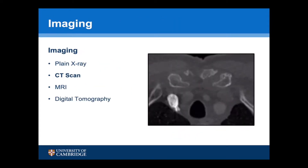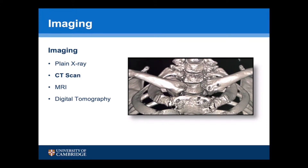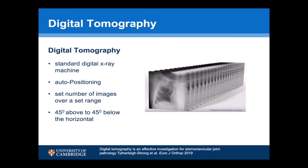Plain x-rays of the sternoclavicular joint are difficult to interpret due to the underlying cervical spine. CT scans are very good at looking for osteoarthritis of the joint and also the presence of any loose bodies. Reformatted CT scans can be useful if there's been any pre-existing surgery. If there are any concerns with regards to instability or a disc tear, the soft tissues are best assessed using an MRI scan. Recently, in our unit, we've moved towards using digital tomography.